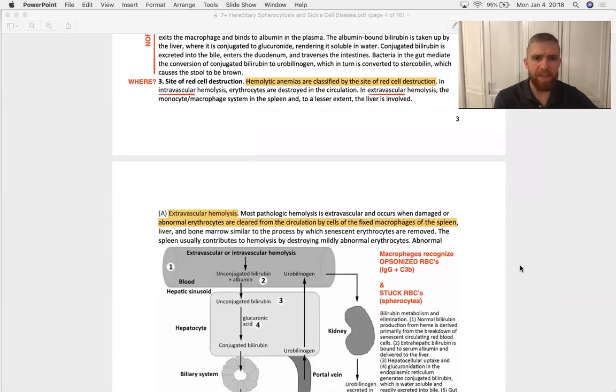So an intravascular hemolysis is in the bloodstream, and an extravascular hemolysis takes place in the spleen. The macrophages just say, hey, can you come with me real quick? And then no more red blood cell. So it's extravascular. And this is another way we classify hemolytic anemia is based on where it's occurring.